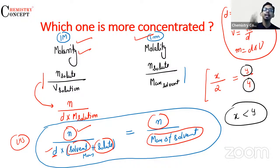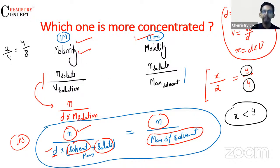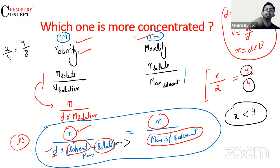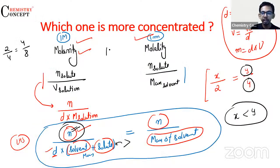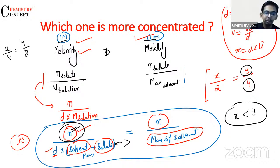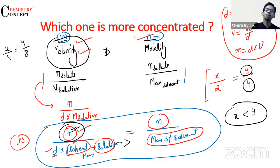Tab hi jaake value will remain unchanged. Jaise agar aap 2 by 4 likhte ho aur 4 ko 8 kar dete ho, toh 2 ko bhi 4 karna padega. Iska matlab molarity wale solution mein zyada number of solute molecules jaate hain. Isliye, one molar solution is more concentrated than one molal solution.